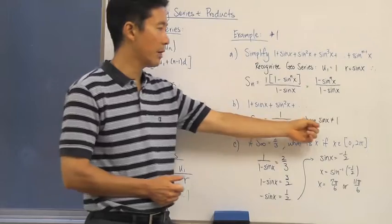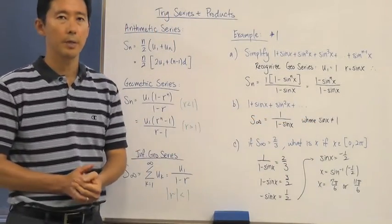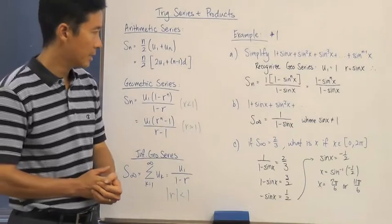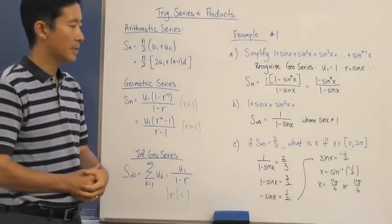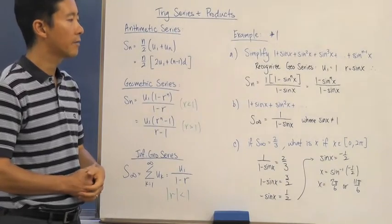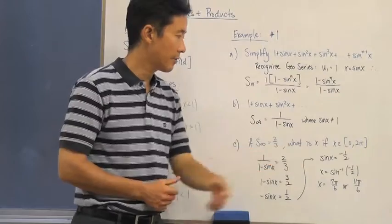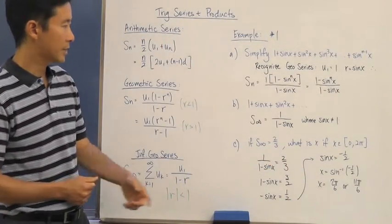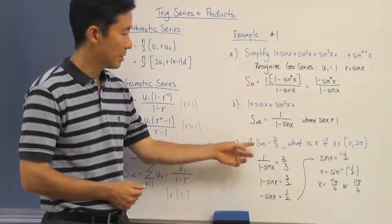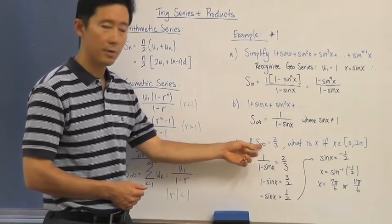Now, of course, we just need to be careful that the sine of x is not going to be equal to 1, otherwise we come up with something that is not possible. Now, in part c, it just says if the infinite geometric series is going to be equal to 2 thirds, what is x if x is an element of 0 to 2 pi?